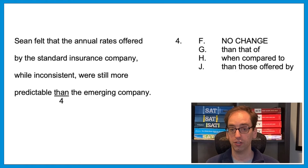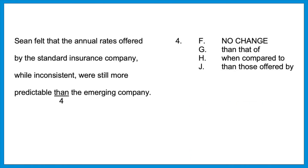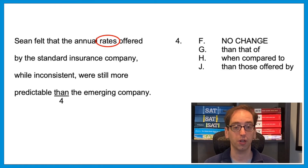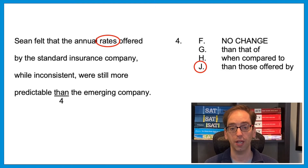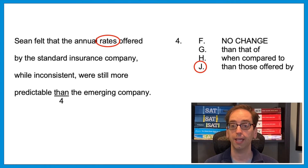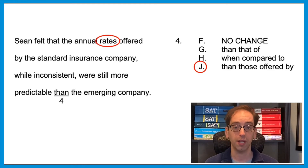The question reads: 'Sean felt that the annual rates offered by the standard insurance company, while inconsistent, were still more predictable than the emerging company.' The first part of the comparison says 'the rates offered by the standard insurance company,' but then it's compared to 'the emerging company' — that's wrong. We need to compare rates to rates, so the answer is J: 'those offered by the emerging company.' Since the sentence says 'rates' (plural), we need 'those of,' not 'that of' — which would require a singular 'rate.'